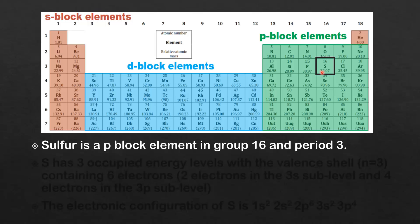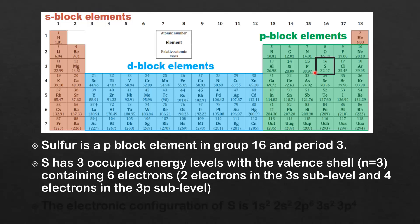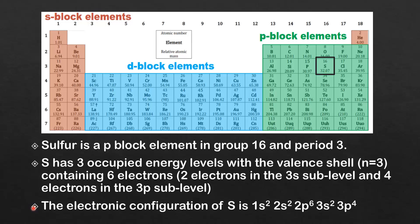Next we look at sulfur. Sulfur is a P block element in group 16 and period 3. Sulfur has 3 occupied energy levels with the valence shell containing 6 electrons: 2 electrons in the 3S sublevel and 4 electrons in the 3P sublevel. The electronic configuration of sulfur is 1S2, 2S2, 2P6, 3S2, 3P4.